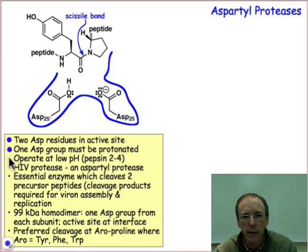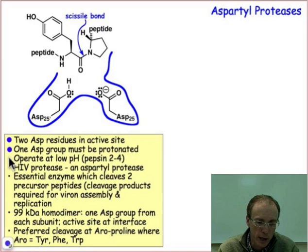Because of their acidic groups, these aspartyl groups are quite acidic. They are able to function at low pH, and so that's why they're capable of operating in the stomach where the pH can be quite low. And a prototypical example is the enzyme pepsin.